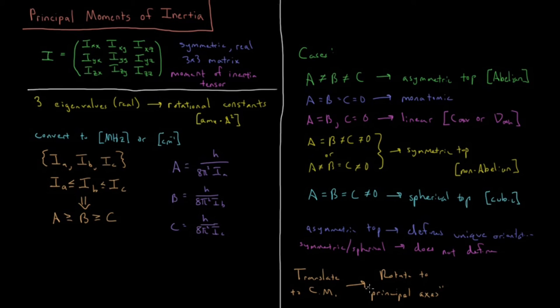Principal axes is the orientation in which the moment of inertia tensor is diagonal. The eigenvectors of the moment of inertia tensor when it's diagonal are just the unit vectors, Cartesian unit vectors. In that case, we would have a unique orientation and we have removed the redundant degrees of freedom. If you've got an asymmetric top or you are linear or monatomic, we'd have to do more work for symmetric and spherical tops.